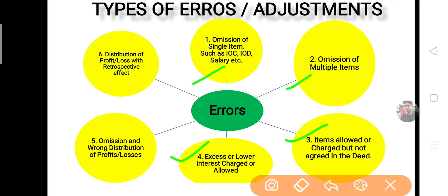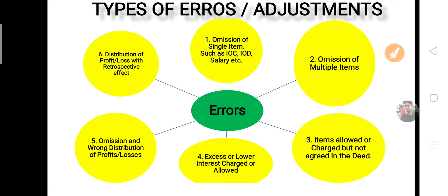पाँचवाँ type: omission combined with wrong profit distribution — interest on capital, salary जो agreed था वो भी भूले और profit का distribution भी effect में आया। छठा और last type: distribution of profit or loss with retrospective effect — retrospective effect की meaning हम later questions के साथ समझेंगे। Total 6 types के errors हैं। इनको रटना नहीं, बस समझना है। इन सभी में वही rule follow करेंगे जो हमने देखा था।